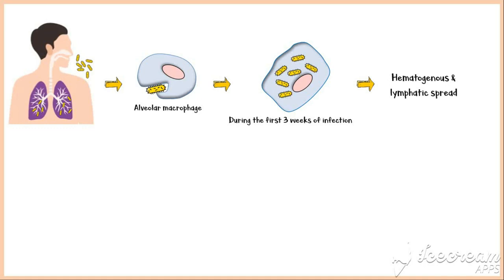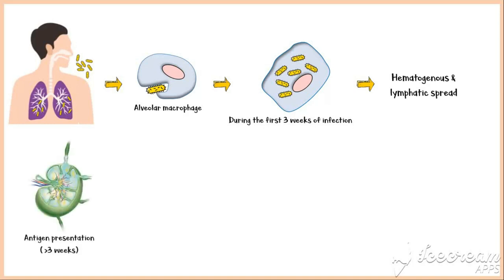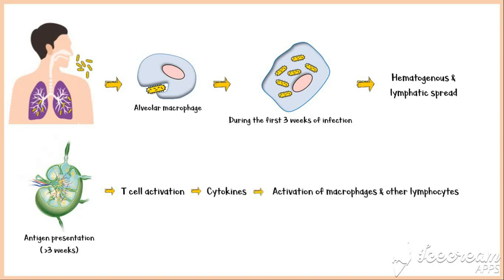After bacteria reach the lymph nodes, macrophages process mycobacterial antigens and present them to the T lymphocytes. This usually happens after about three weeks from the initial infection. As a result of antigen presentation, T cells get activated and produce various cytokines that cause activation of macrophages and other lymphocytes. In immunocompetent hosts, activated macrophages kill bacteria by various mechanisms and halt the infection.